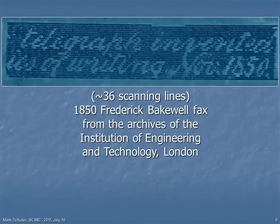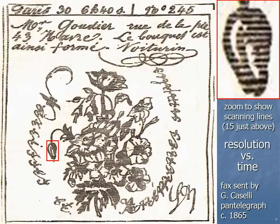Here's an early copying telegraph transmission in 1850 from a different inventor, Frederick Bakewell. As you can see, the received image was blue. We can count about 36 scanning lines in the message that was transmitted. This is from an even more refined version developed by Giovanni Caselli, which went into commercial service in France in 1865. We can count 15 scanning lines in just the flower bud on the left side. The greater the resolution, however, the longer it took to transmit the image.